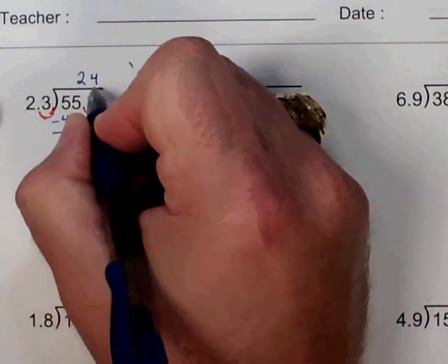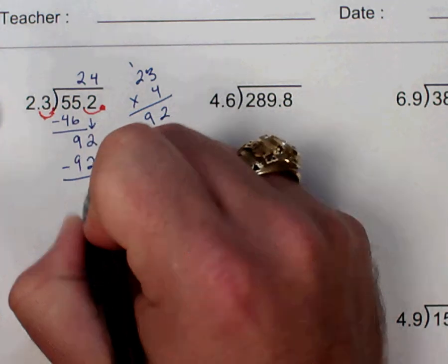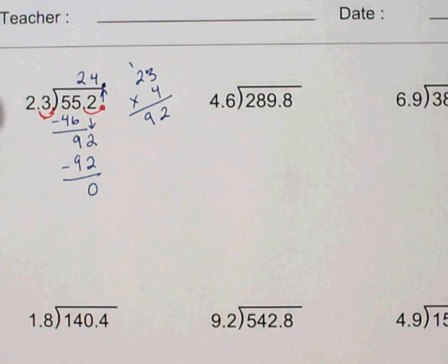So 4 times 23 gives me 92. And I get no remainder. So my answer here, because my decimal is just going to shoot right up and go straight up, is going to be 24.